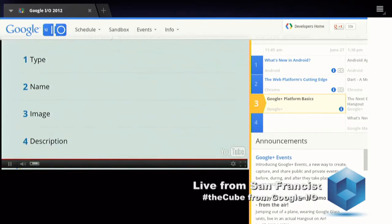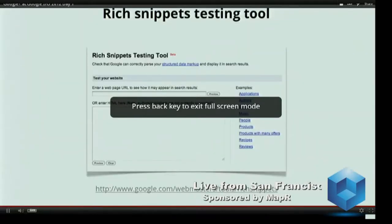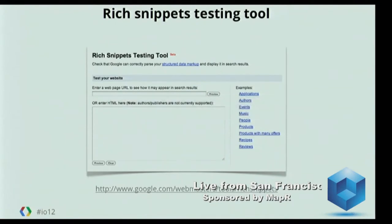So those are the four things you need to describe an entity within Google. We've already been doing a lot of work in web search around rich snippets, and we extend the rich snippets testing tool to also support schema.org. What this means is you can point a URL in there, and we'll show you not just the rich snippets, not just the microformats, but the schema.org markup and show you the entities in that web page.